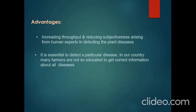The advantages of using the proposed system include increasing throughput and reducing subjectiveness that arises from human experts in detecting plant diseases. It is essential to detect a particular disease, as in our country many farmers are not educated enough to get correct information about all the diseases. When the proposed system is implemented in real time, these advantages will be very helpful for many of them.